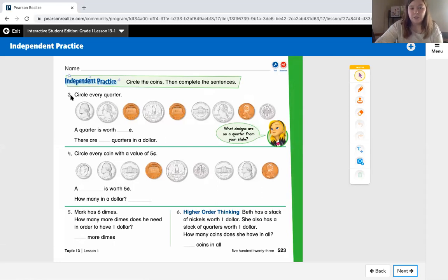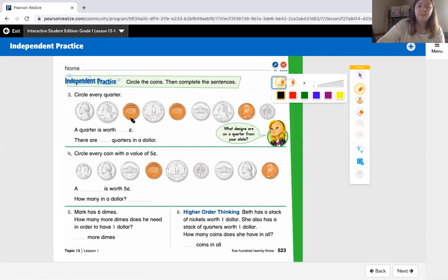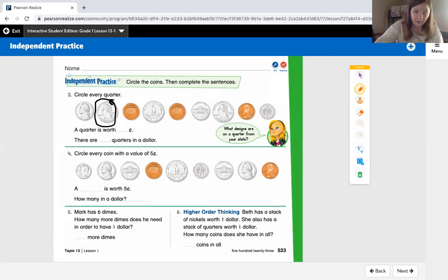We are first going to circle every quarter. I know a quarter is silver. I know it's bigger than a dime and a nickel. So I see a quarter here. This would be a good time to take out all that change that you have in piggy banks or mom and dad's purse and compare and contrast and look at all the coins.